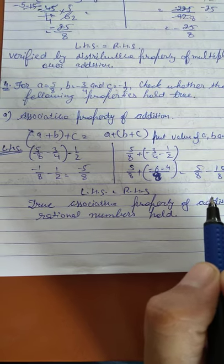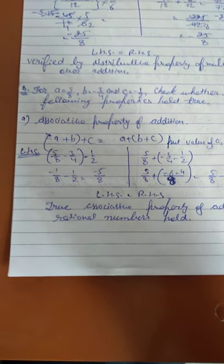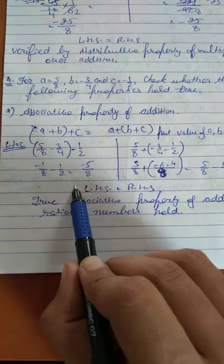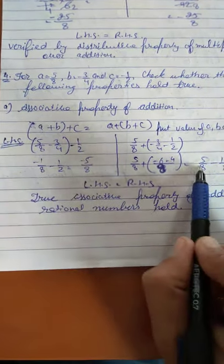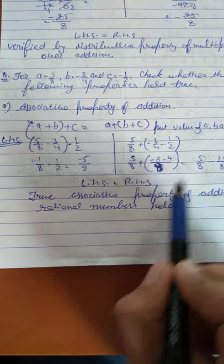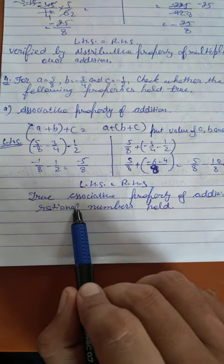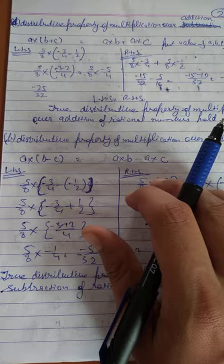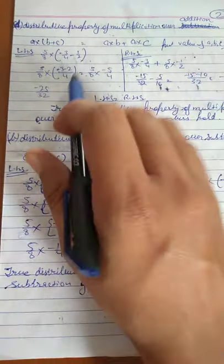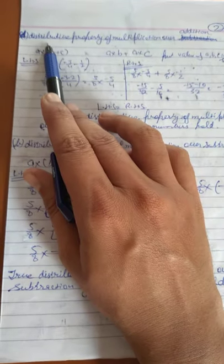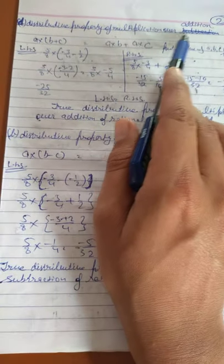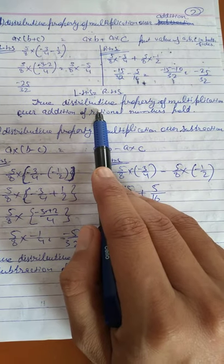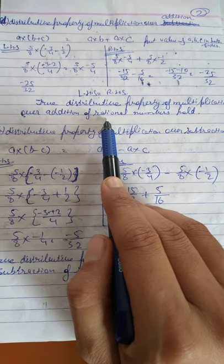First we discuss the associative property of addition. We know it holds for rational numbers, integers, and fractions. Solving the left-hand side and right-hand side gives the same result. In part d, the distributive property of multiplication over addition is also held in rational numbers.